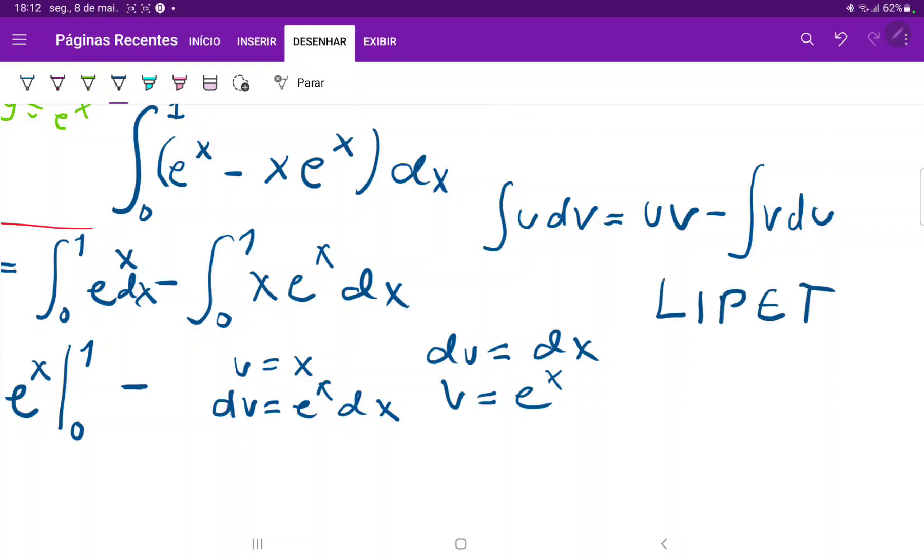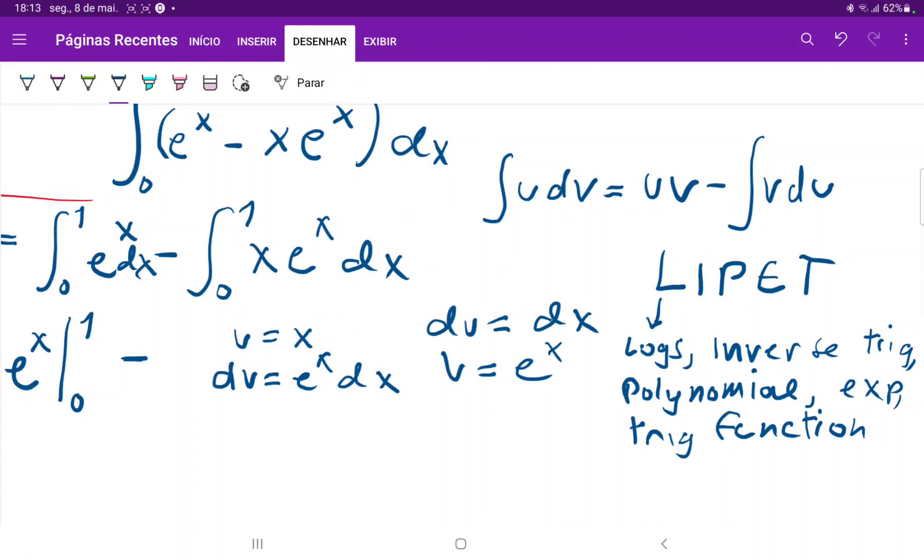I like to use this acronym. That is the order that you should choose your u. So this is your logs, and then your inverse trig, and then you have your polynomials. So in this case, this is our x, right? It's a polynomial. And then you have your exponential functions. And lastly, your trig functions. And we can see why the exponential and the trigs, they're one of the last choices that we want for u, because when we take the derivative, we don't get something simpler. We actually, in many cases, get something that's more complicated. So with that being said, let's plug this into the formula.